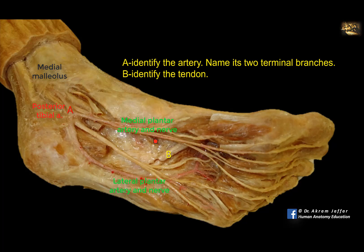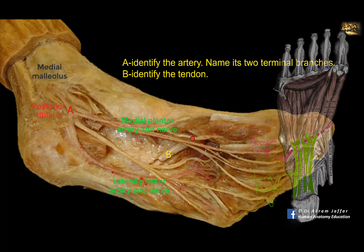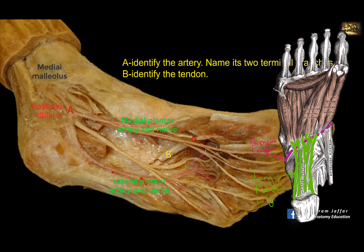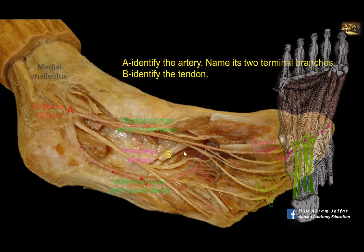Many muscles have been dissected and removed here, so we can see a very deep structure that crosses from the lateral to the medial side of the sole of the foot. This is the tendon of peroneus longus muscle. Usually it is bridged by the long plantar ligament, which has been cut and dissected here.